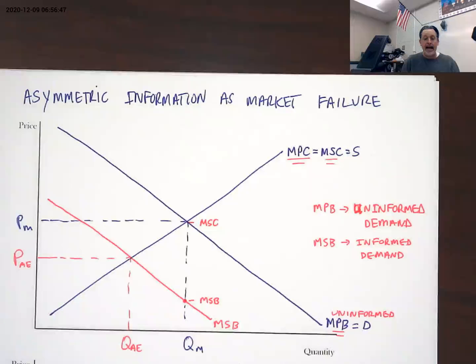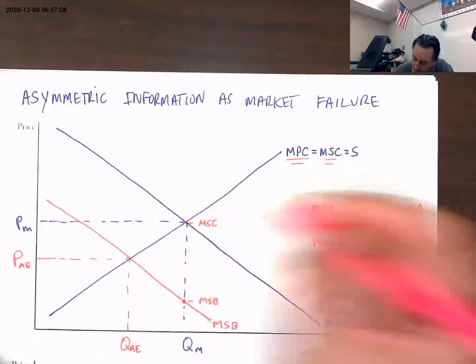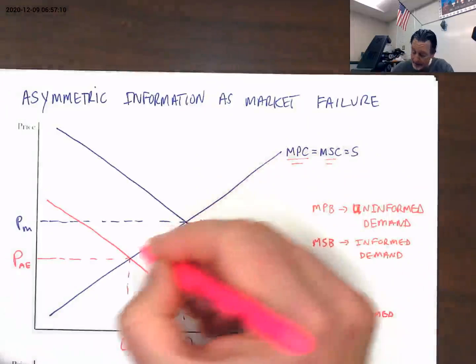That is an indication that we are over-allocating resources to this particular good, not necessarily because it's causing a problem as an externality, but because people are simply ill-informed about the demand that they should have for this product.